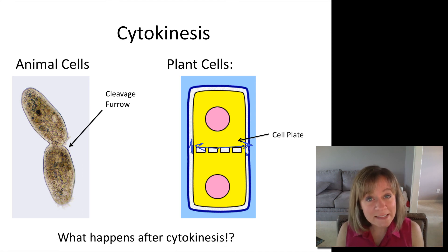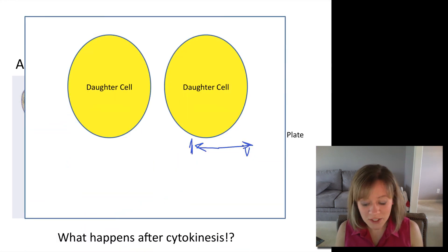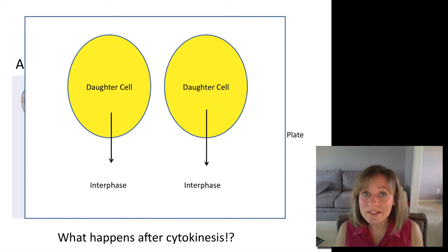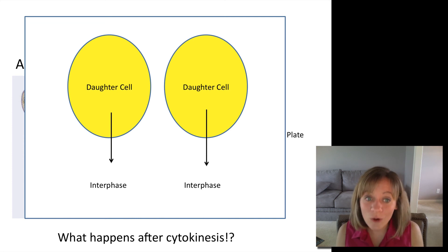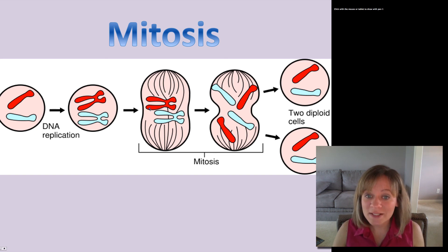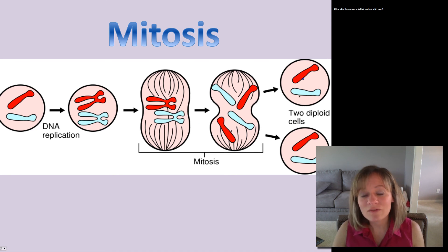What happens after cytokinesis? We have our two new daughter cells — what do they need to do? They need to go about their everyday metabolism. They enter interphase, then replicate their DNA, and then go back into mitosis to make another cell. Here's the overall picture: in interphase we have DNA replication, giving us two sister chromatids. The sister chromatids line up during metaphase, are pulled apart during anaphase, and then cytokinesis produces two brand new cells.